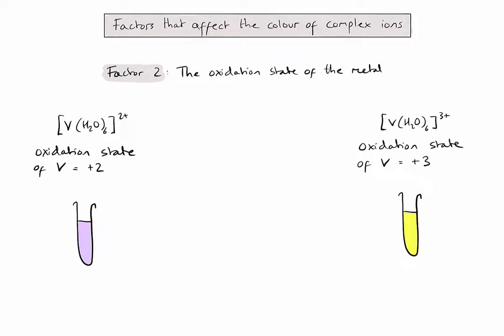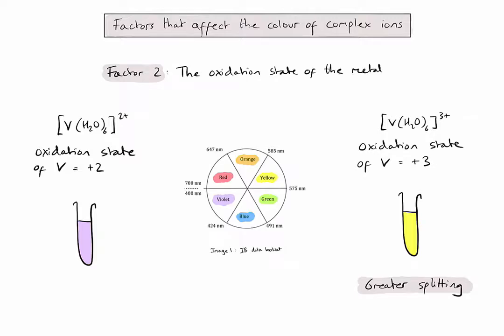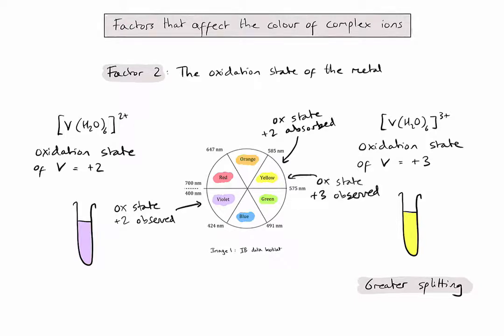The oxidation state of the metal increasing leads to greater splitting of the d-sub level. The vanadium with the oxidation state of plus two appears violet, meaning it must have absorbed light in the yellow part of the spectrum. The complex ion on the right, which appears yellow, must have absorbed light in the violet part of the spectrum. As predicted, the vanadium complex ion with a plus three oxidation state has absorbed light of a shorter wavelength or higher energy because of the greater splitting.